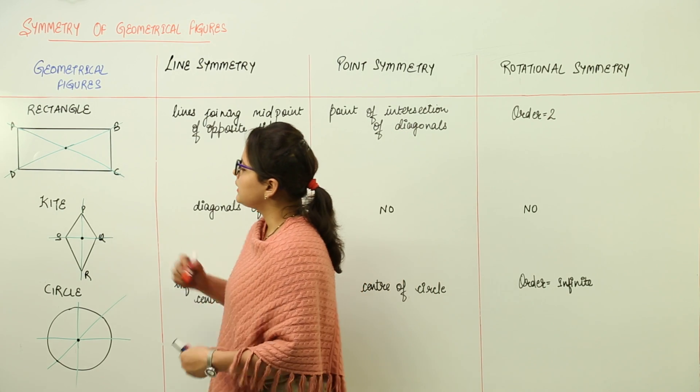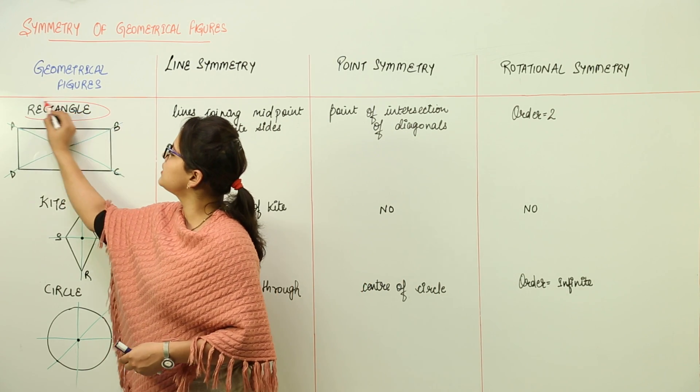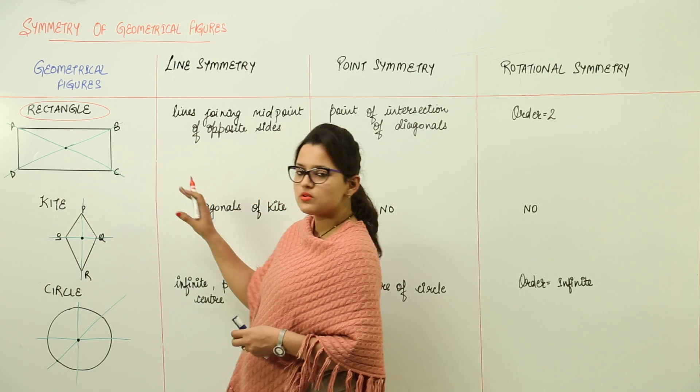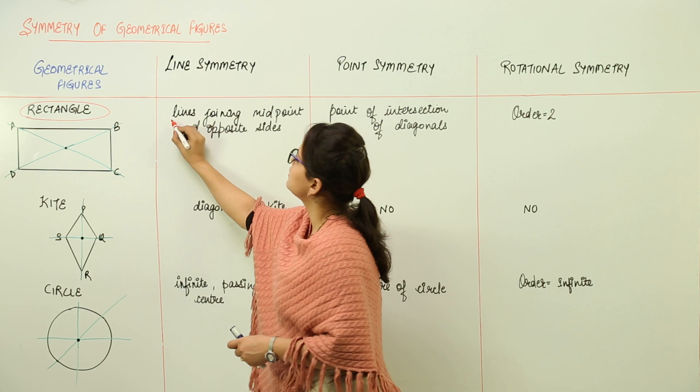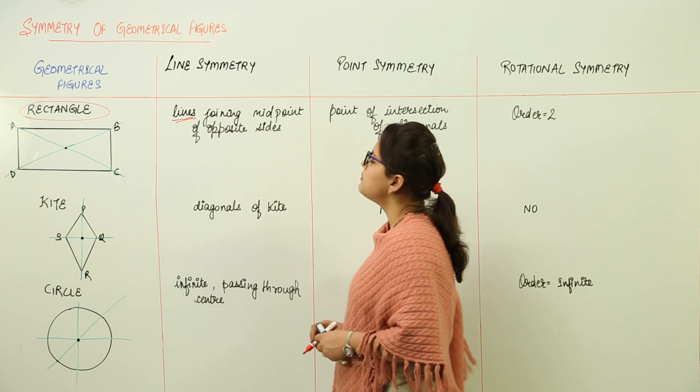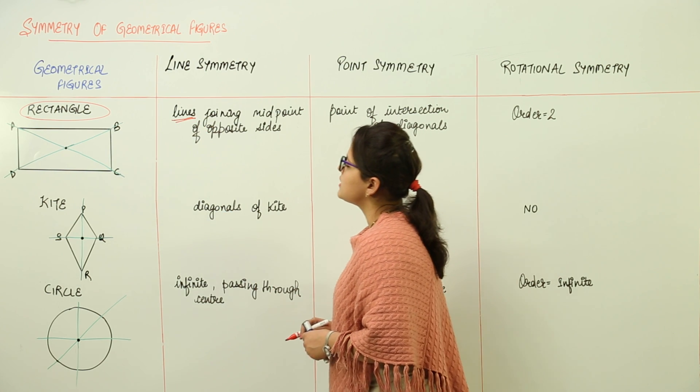We have rectangle. Rectangle has four vertices, that is it has four sides also. So a rectangle has line symmetry by those lines which are joining the midpoints of the opposite sides.